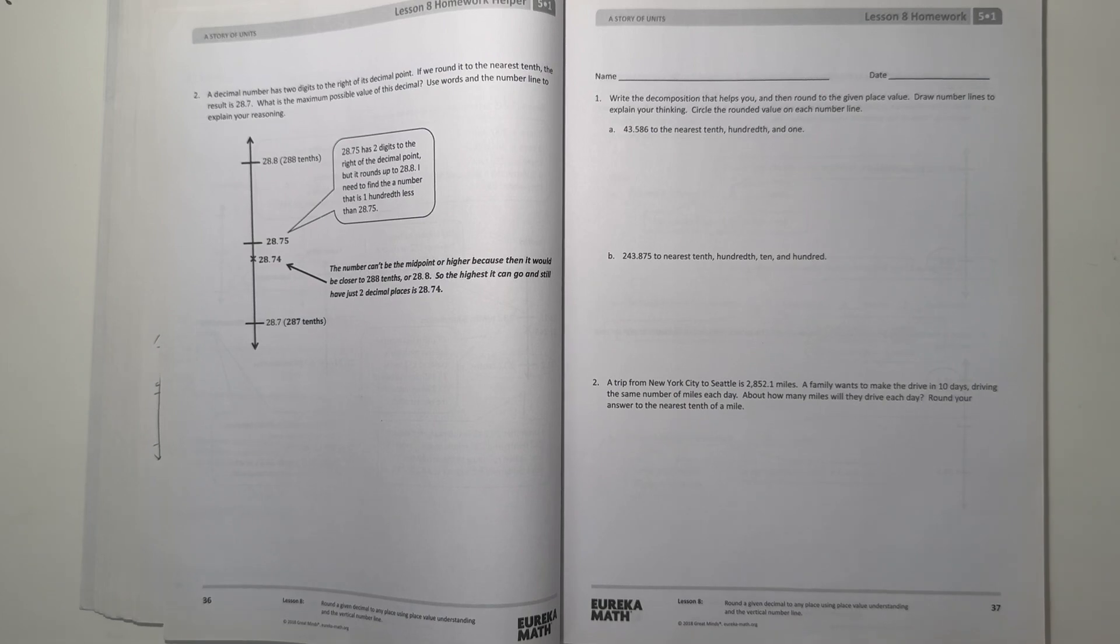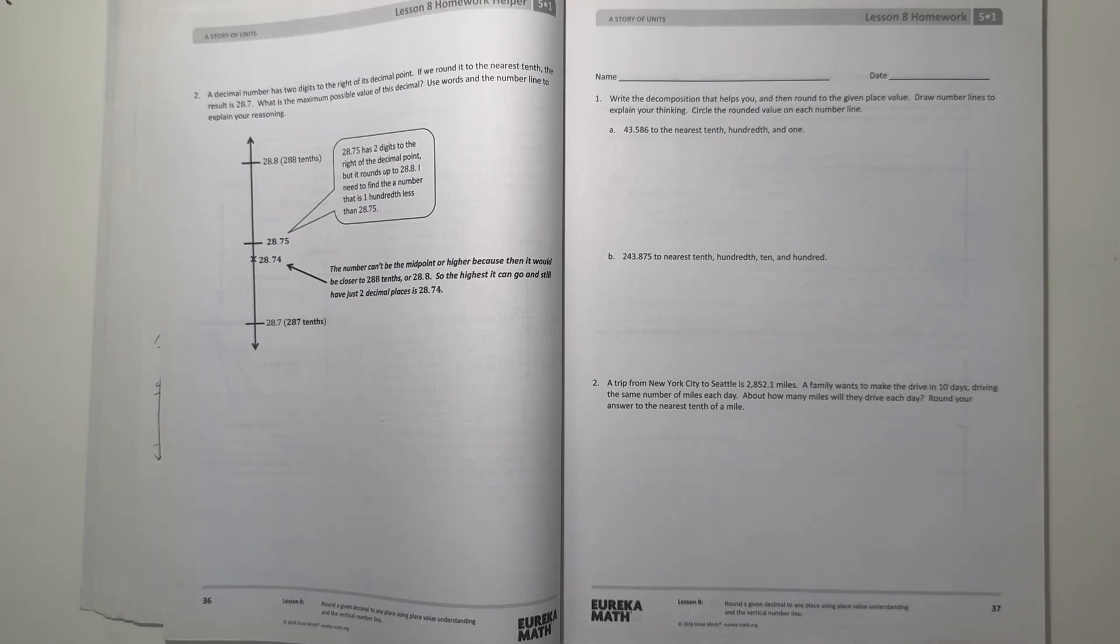Hey guys, Aubrey here. Today I'm doing the Eureka Math Grade 5 Module 1 Lesson 8 homework. So let's get started. Number 1. Write the decomposition that helps you and then round to the given place value. Draw number lines to explain your thinking. Circle the rounded value on each number line.